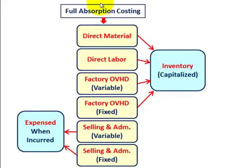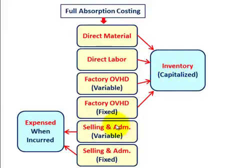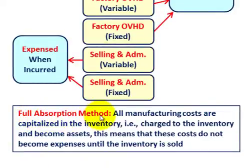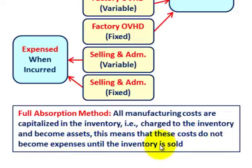For full absorption costing, direct materials, direct labor, and factory overhead — both variable and fixed — are all recorded and capitalized in inventory. Selling and administrative expenses, both variable and fixed, are expensed when incurred. All manufacturing costs are capitalized in inventory and become assets, meaning these costs do not become expenses until the inventory is sold.